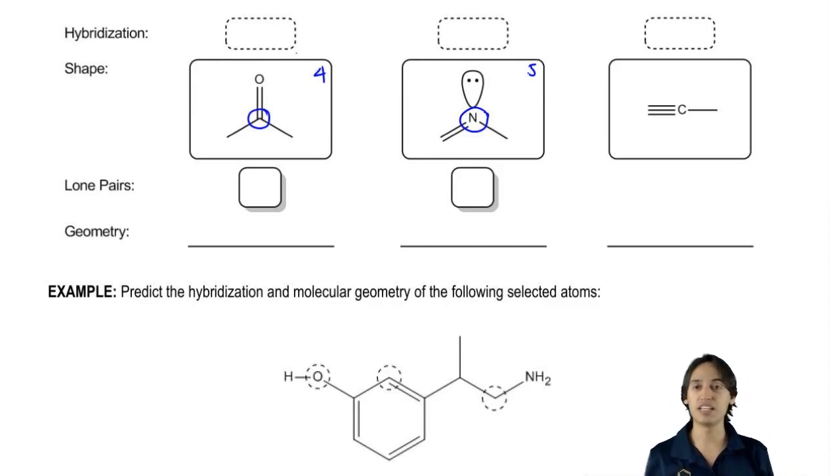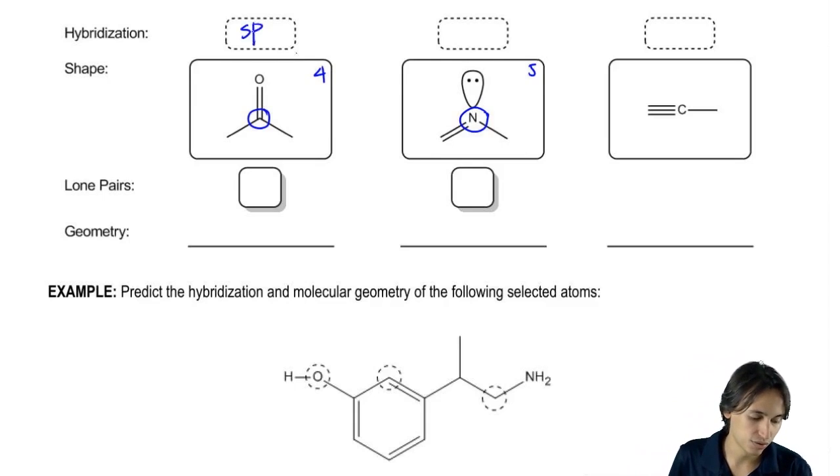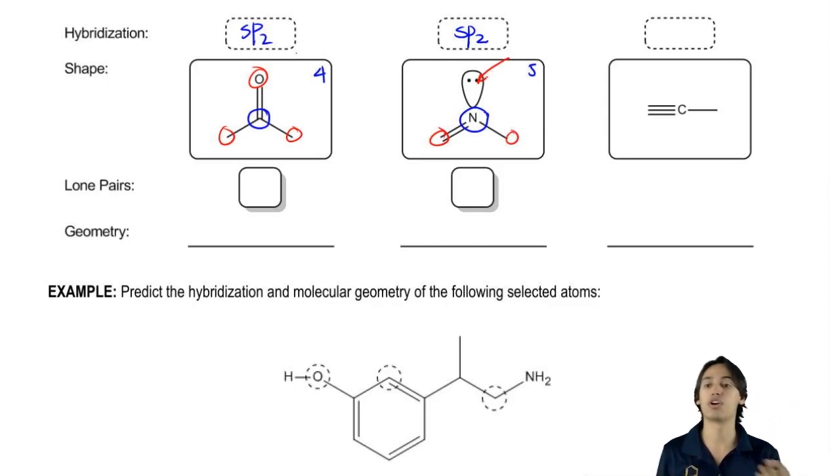So both of these, because they have three bond sites each, are going to be sp2. Let me point out how it's three. For the double bond O, I have basically one atom here, one atom here, one atom here. That's three. For the N, I have one atom here, one atom here, and a lone pair there, which is also three. Get it? So they're both sp2.